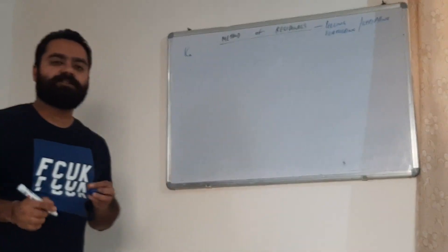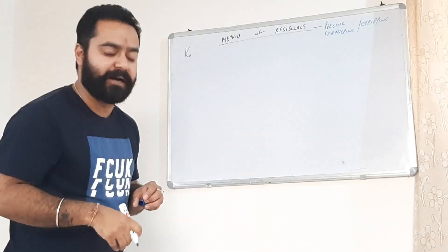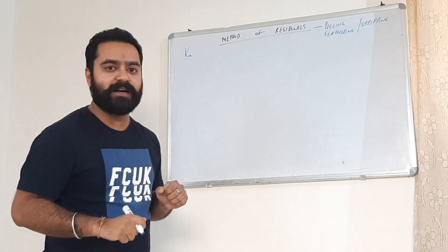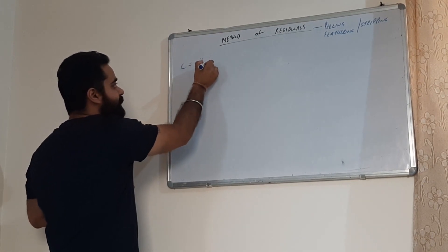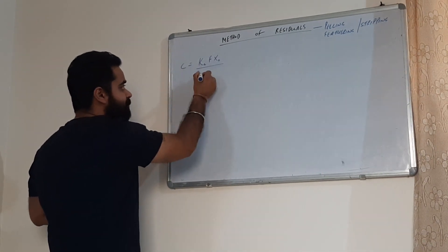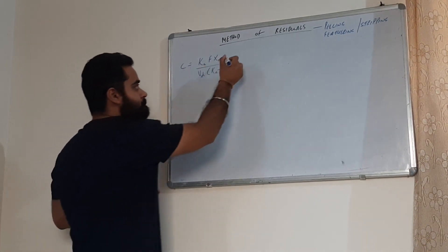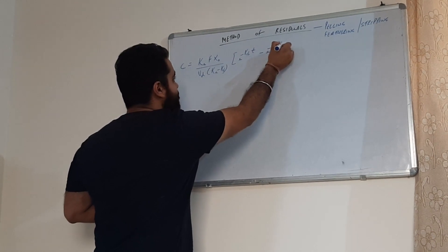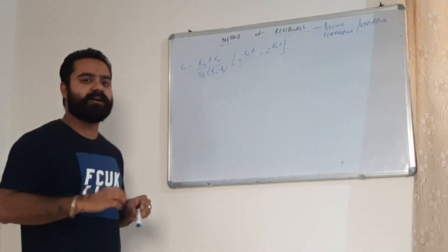The purpose of the method of residuals is to resolve a multi-exponential equation into its individual components. Let us take the example of one compartment open model extravascular administration. The equation was: C equals Ka·F·X0 divided by Vd(Ka minus Ke), multiplied by e to the power minus Ke·t minus e to the power minus Ka·t. This was the general equation for plasma concentration in case of extravascular administration.